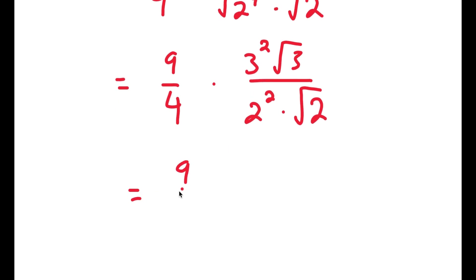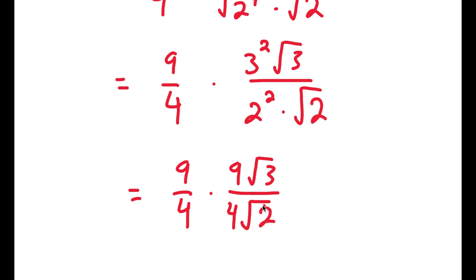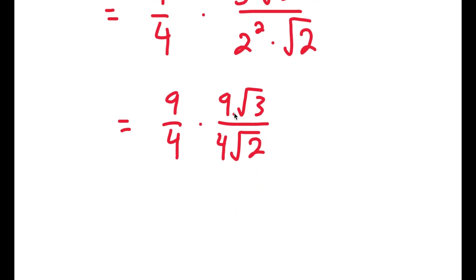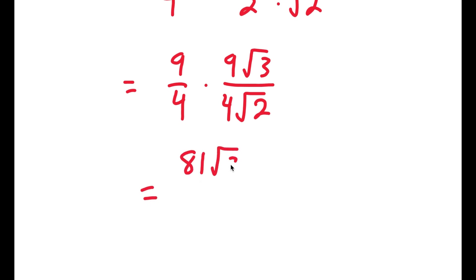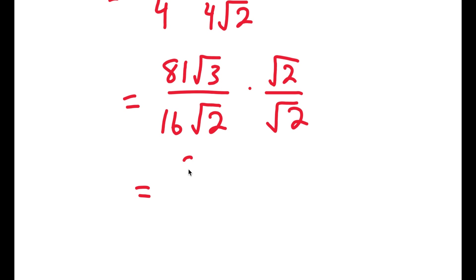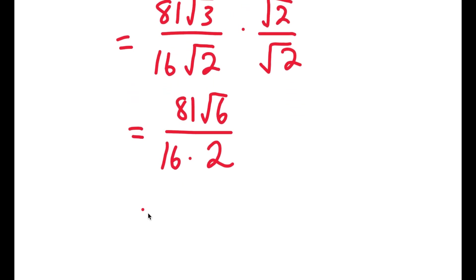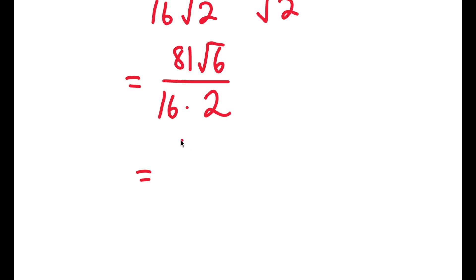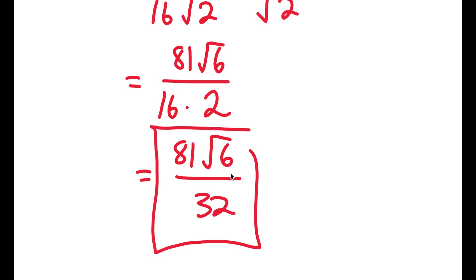Now 3 squared is 9, so I get 9 over 4 times 9 times the square root of 3 over 4 times the square root of 2. Now 9 times 9 is 81, and 4 times 4 is 16, so I get 81 times the square root of 3 over 16 times the square root of 2. Now I'm going to multiply by the square root of 2 over the square root of 2. This gives 81 times the square root of 6 over 16 times 2, which equals 81 times the square root of 6 over 32. So this is my answer in its most simplified form.